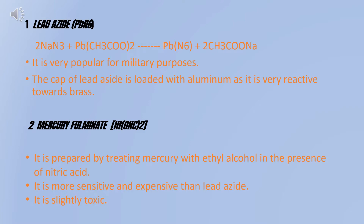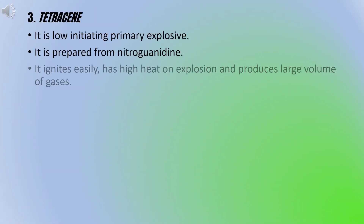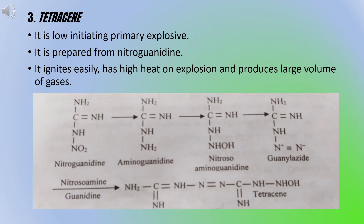Lead azide is very popular for military purposes. The cap of lead azide is loaded with aluminium as it is very reactive towards brass. Mercury fulminate is prepared by treating mercury with ethyl alcohol in the presence of nitric acid. It is more sensitive and expensive than lead azide, and is slightly toxic. Tetrazine is a low initiating primary explosive. It is prepared from nitroguanidine.